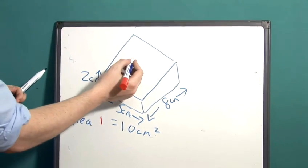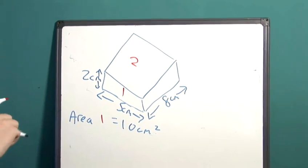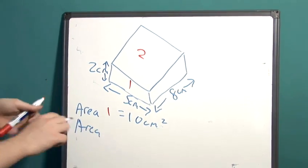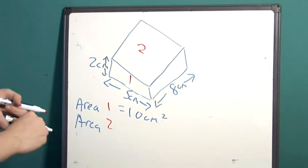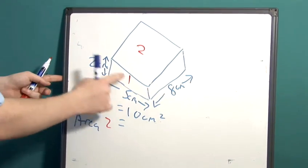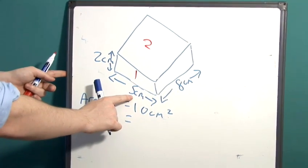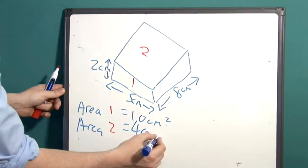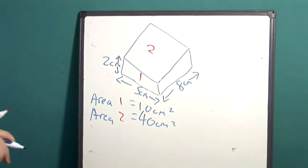Let's work out the area of this one. So the area of 2 is equal to this length here which is 8 centimetres multiplied by this length here which is 5 centimetres. 8 multiplied by 5 is 40 and we have centimetres squared once again.